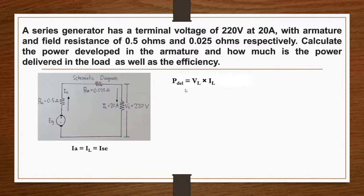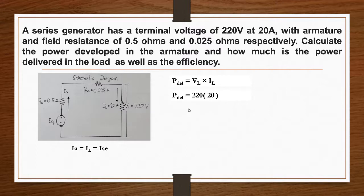Calculate for the power developed. Power developed equals load voltage times load current. Our load voltage is 220 volts times our load current, which is 20. So we got our power developed, which is 4,400 watts.